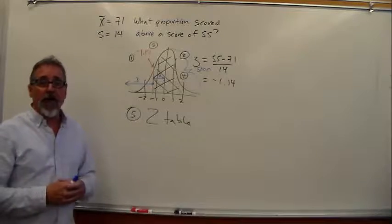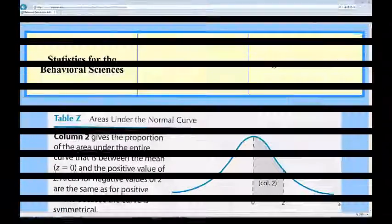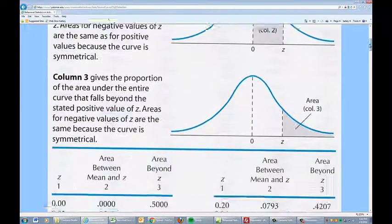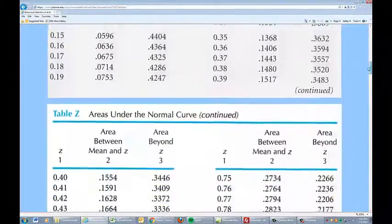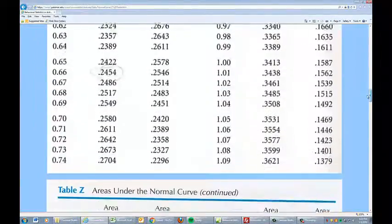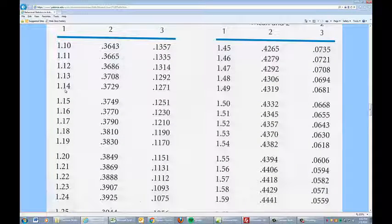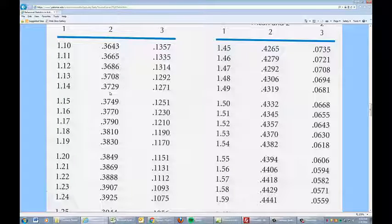Let's go to the z-table now. Alright, so here we are at the z-table from our link from the lesson. We're going to look for 1.14 in column 1. There it is right there, 1.14. And we're looking for the column 2 value. Here's the column 2 value, 0.3729.